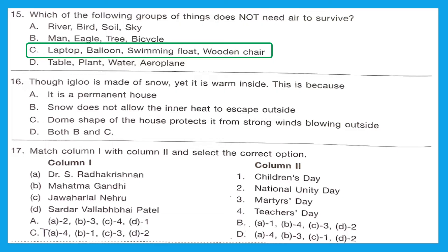Question 16: Though an igloo is made of snow, it is warm inside. Why? Option B says snow does not allow inner heat to escape outside, and option C says the dome shape protects from strong winds. The right answer is both B and C — both contribute to keeping the igloo warm inside.